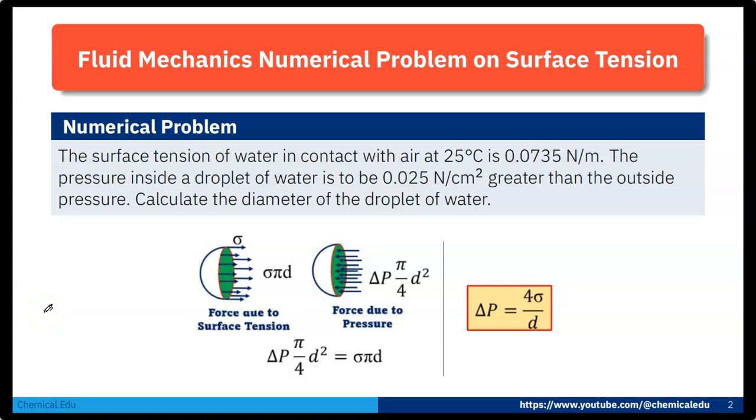Today I will solve one fluid mechanics numerical problem on surface tension. So here is the numerical problem. The surface tension of water in contact with air at 25 degrees centigrade is 0.0735 Newton per meter.